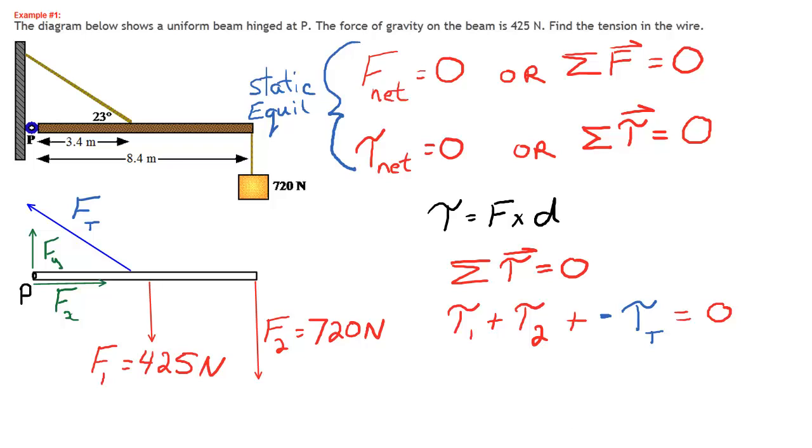So in my equation, T1 is the torque generated by F1. T2 is the torque generated by F2. And T, capital T, T tension, is the torque generated by Ft, the tension force. Notice this one's negative because we said it's counterclockwise.